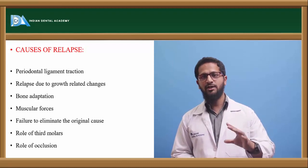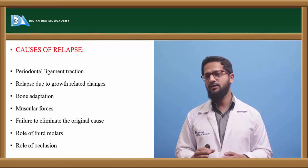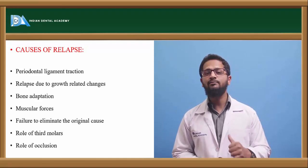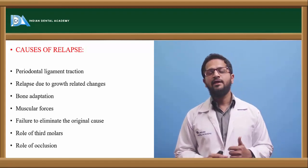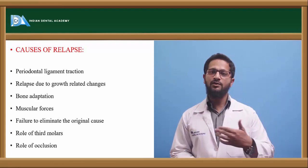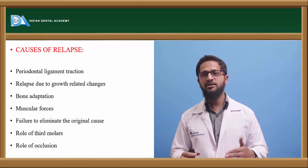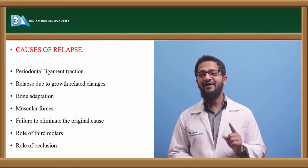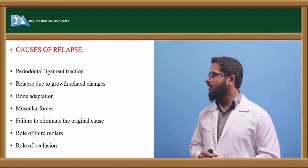For example, if a patient presents with severe anterior proclination and open bite due to tongue thrust habit, simply correcting the malocclusion is insufficient. The tongue thrust habit must be intercepted first. If not corrected and the patient continues the habit after orthodontic treatment, it will again result in the same proclination and spacing — this is relapse. The original etiological cause must be intercepted before or alongside orthodontic treatment.